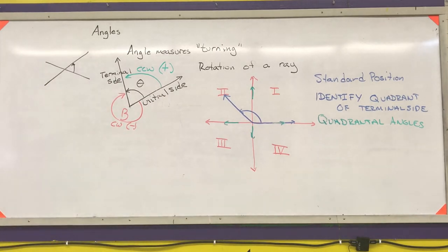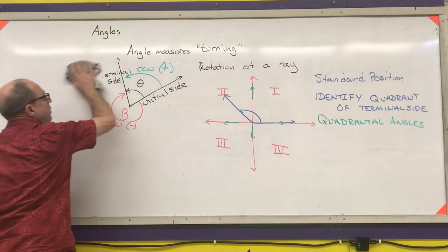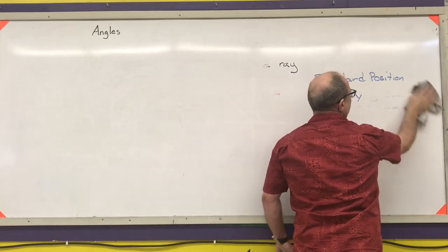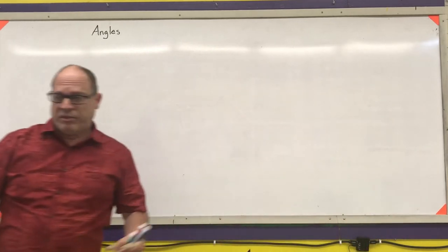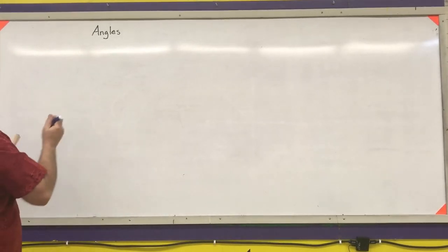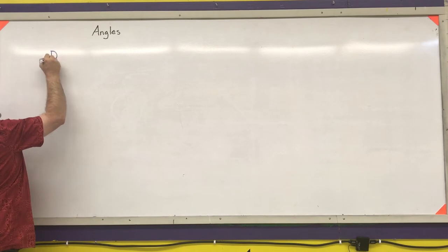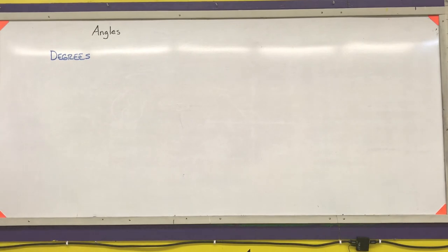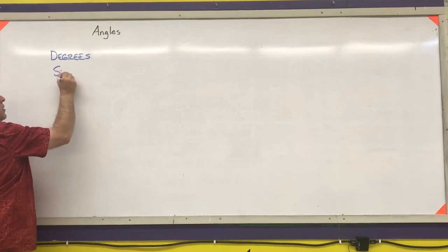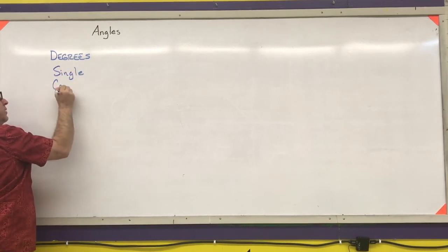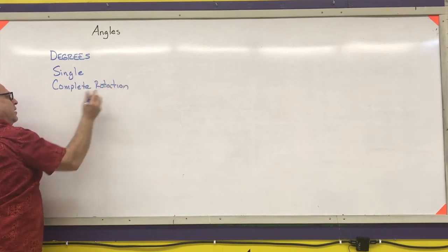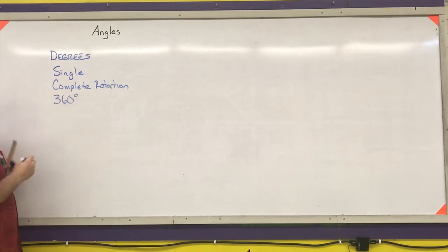Next we're going to talk about how we measure angles. There are two major ways — there are actually more than two, but we'll cover two in this class. The first way is in degrees. If we measure angles in degrees, a single complete rotation is 360 degrees.